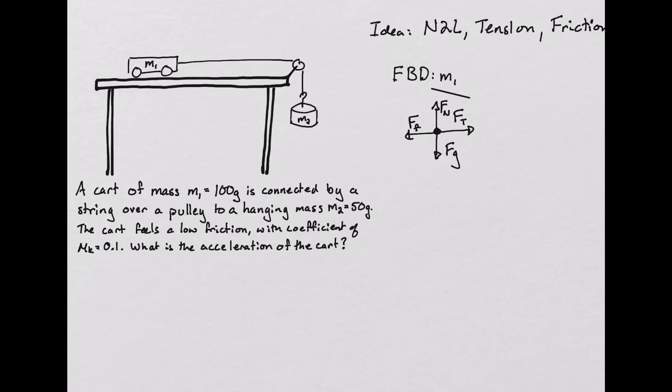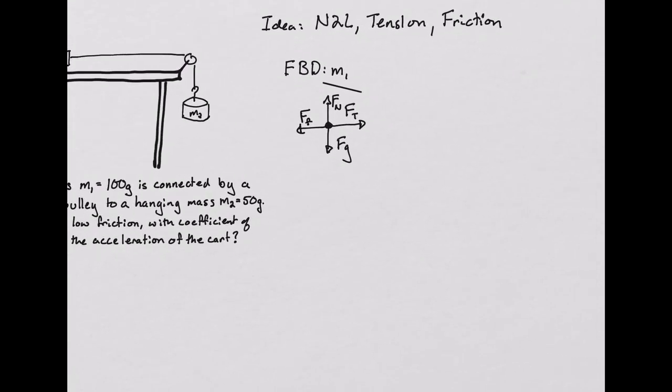Next, we will draw the free body diagram for mass 2. In this case, looking at mass 2, we can recognize that the force of tension will be pulling in the upward direction. And, as before, we will have the force of gravity pulling down.